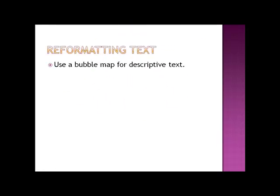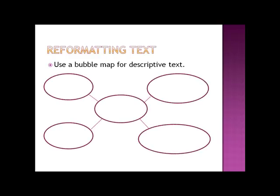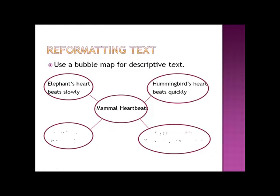When you reformat descriptive text, it's always a bubble map. So here we go — we've got a bubble map here. In the middle goes the narrow topic, which was 'mammal heartbeats.' And everything we underlined in any way goes in the bubble: we underlined parts about the elephant's heartbeat, the hummingbird's heartbeat, and the giraffe's heartbeat. And then we also underlined — it was a double underline but still an underline — the main idea: 'The bigger the mammal, the slower the heartbeat.' So we've reduced that paragraph to its most important facts and can use that to base our understanding and make sure we learned what the paragraph wanted us to learn.